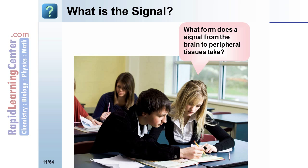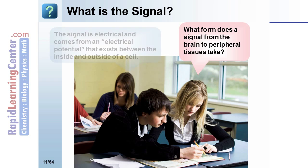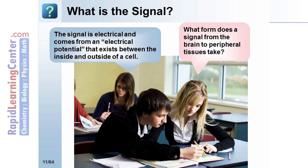What form does the signal from the brain to peripheral tissues take? The signal is electrical, arising from an electrical potential that exists between the inside and the outside of a cell.